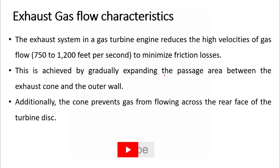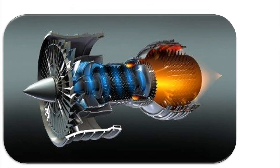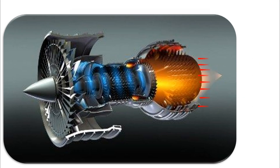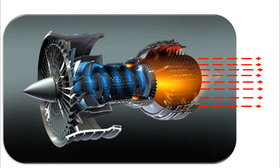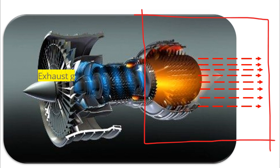The cone also plays a crucial role in preventing the exhaust gases from flowing across the rear face of the turbine disc. The exhaust gases pass into the atmosphere through the propelling nozzle, which is a convergent duct, further increasing the gas velocity. The exhaust gases leave the turbine at speeds typically between 200 to 350 meters per second, which can result in significant friction losses along the jet pipe. To mitigate these losses, the exhaust cone gradually increases the cross-sectional area, slowing down the flow and preventing recirculation towards the center of the disc. The velocity at this point is usually kept constant at around Mach 0.5, just under 300 meters per second, due to the temperature of the gases and the speed of sound increasing with temperature.